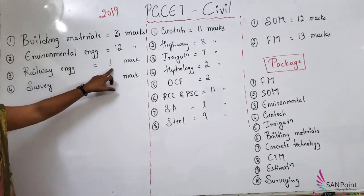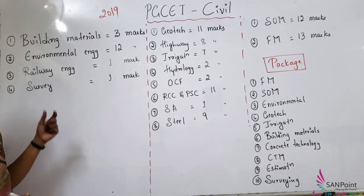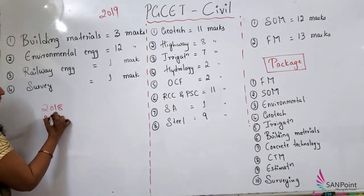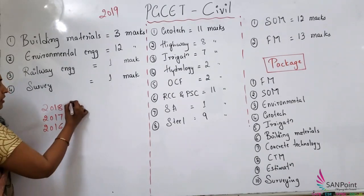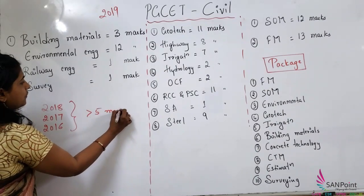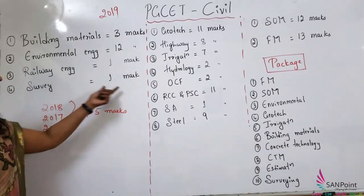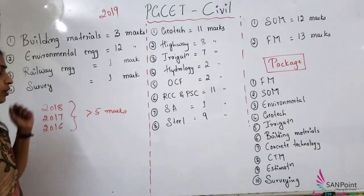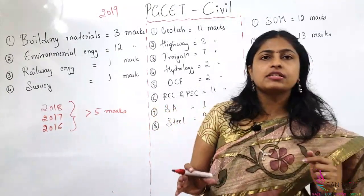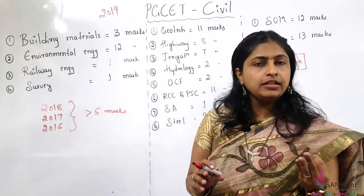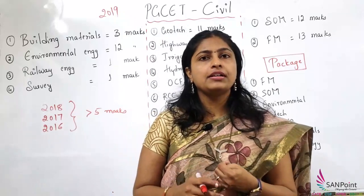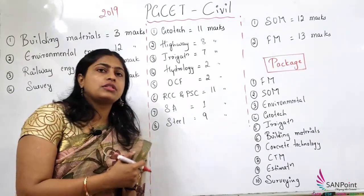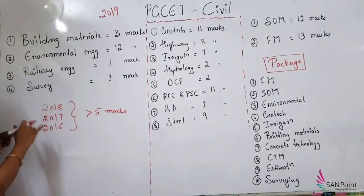Next comes railway engineering — in 2019 it was asked for one mark — and surveying, also asked for one mark. But when I analysed 2018, 2017, and 2016 papers, more than 5 marks were asked from surveying. So you can expect more questions from this topic this year. Topics in surveying include linear measurement (chain surveying), theodolite, levelling, photogrammetry, total station, curve setting, and plane table surveying — you can expect at least one question from chain surveying and contours.